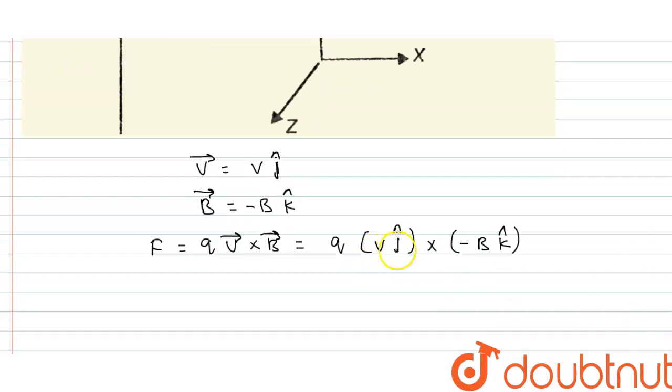As we know that j cap cross k cap is i cap, and this is minus sign, so minus i cap. So minus Q V B i cap. Minus i cap means this is along the negative x-axis.